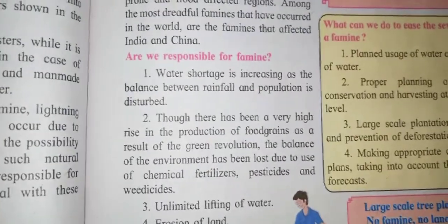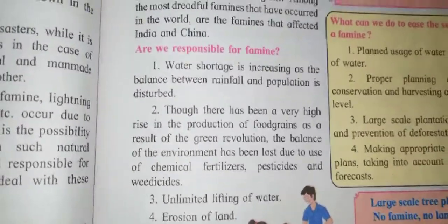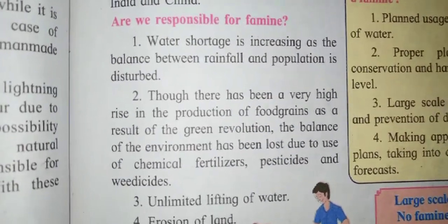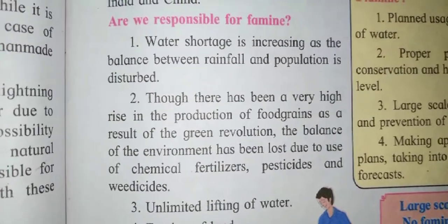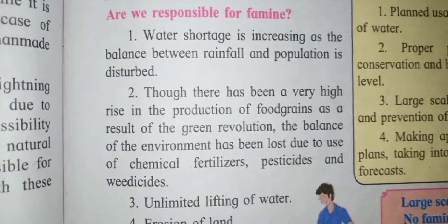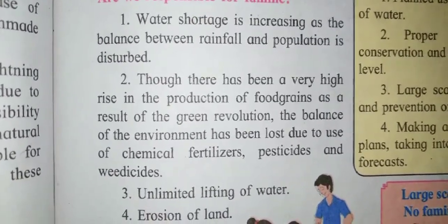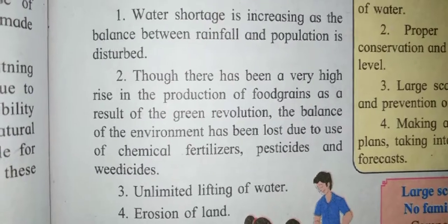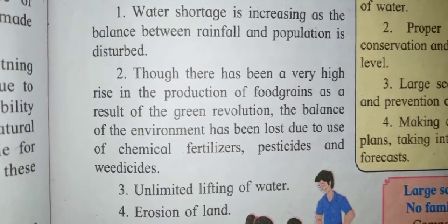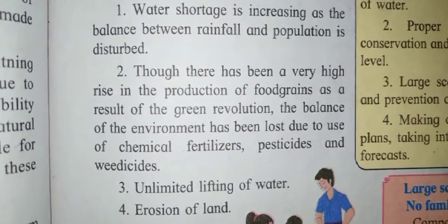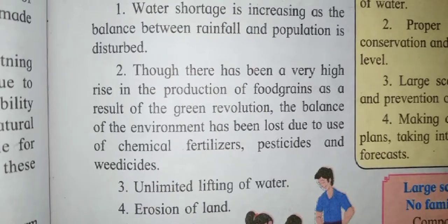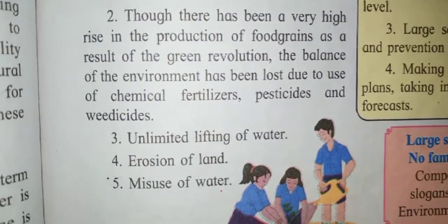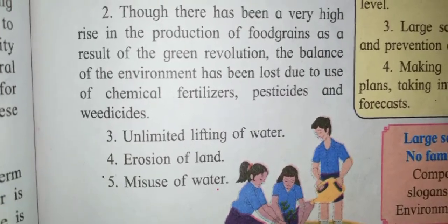Are we responsible for famine? Water storage is decreasing as the balance between rainfall and population is disturbed. Though there has been a very high rise in the production of food grains as a result of the green revolution, the balance of the environment has been lost due to use of chemical fertilizers, pesticides, and herbicides. Third is unlimited lifting of water, erosion of land, and the misuse of water.